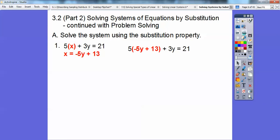Then we're going to distribute the 5 through. So 5 times negative 5y is going to be negative 25y and then 5 times 13 is 65. Here's the plus 3y and 21. Right now we're going to combine these like terms, negative 25y plus 3y. So when we do that, negative 25 plus 3 is negative 22.